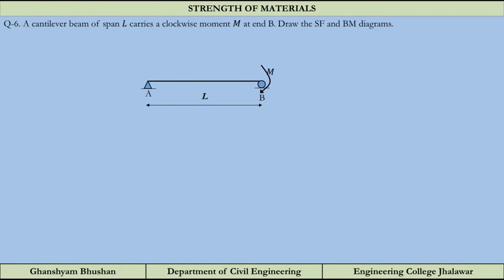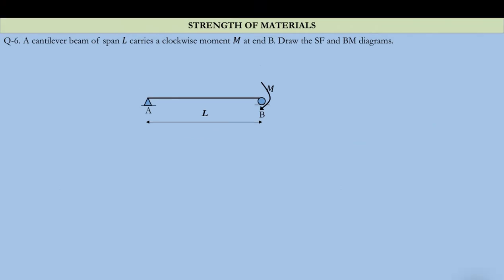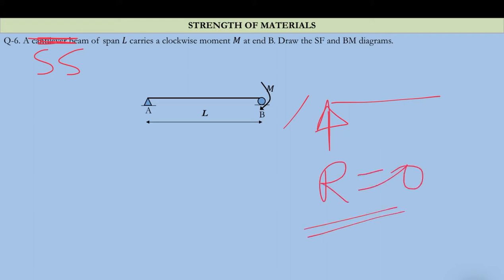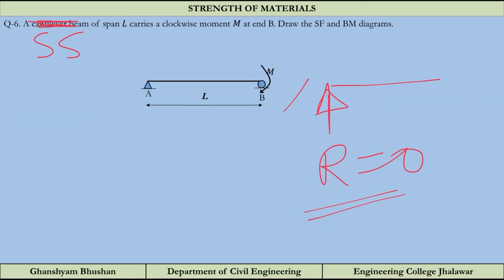Now let us move to the next question. This is not a cantilever — this is a simply supported beam of span L that carries a clockwise moment m at end B. Draw the shear force and bending moment diagram. This is similar to the previous case, but in the previous case reaction Ra was zero, which gave zero shear force throughout. We have to check whether Ra and Rb are zero in this condition too.